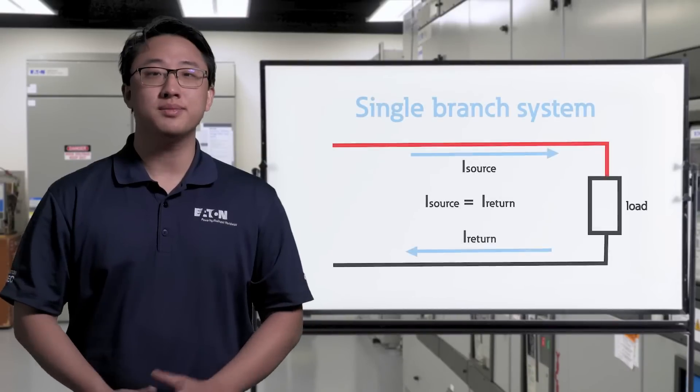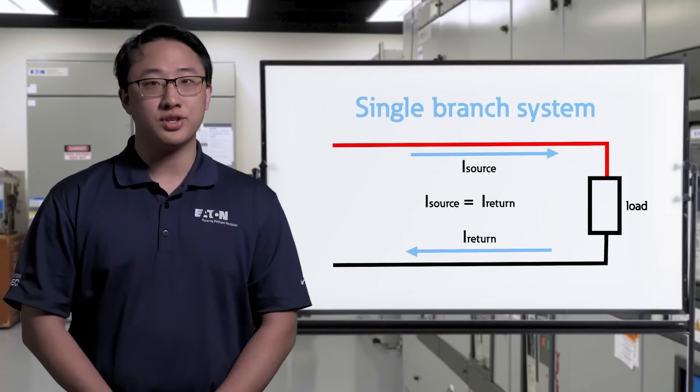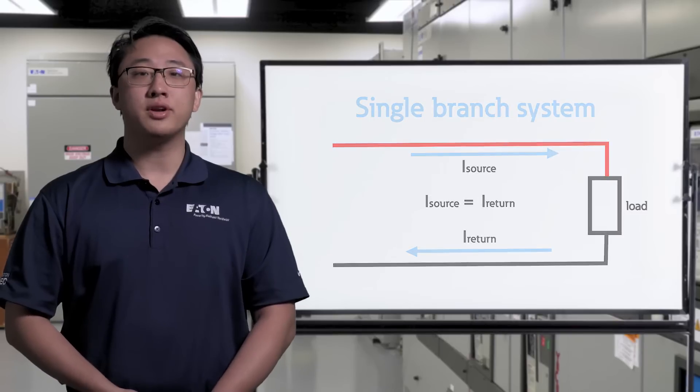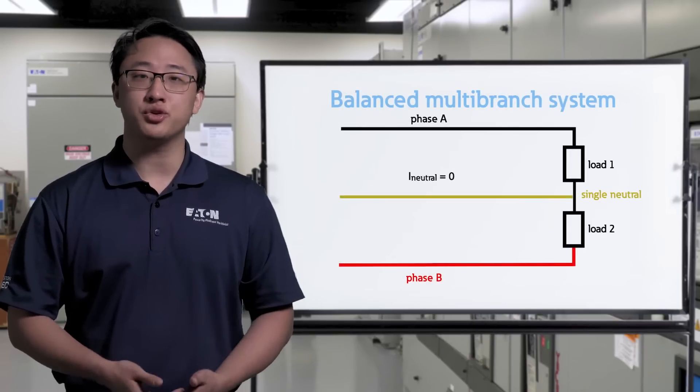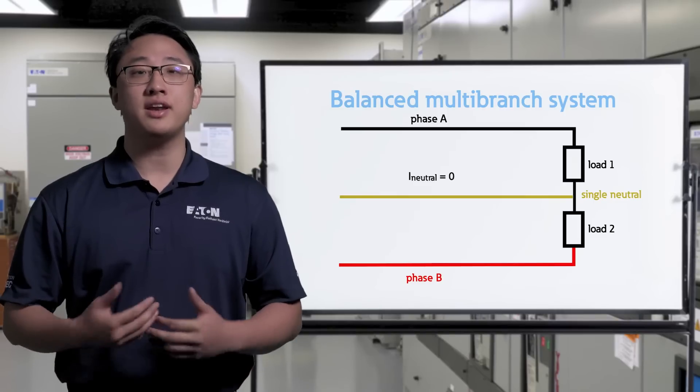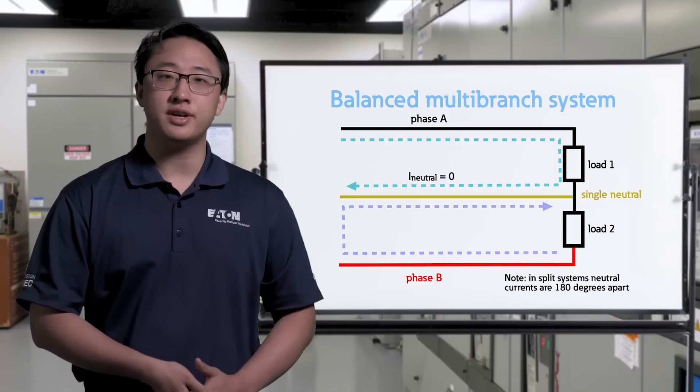In a single branch system, or a system where each phase has its own neutral, the neutral wire will carry all of the return current just like we expect. However, in a balanced multi-branch system, or a system where multiple phases share a single neutral, the neutral actually won't have any current. Instead, the current will return on the other phases which are at complementary points in their cycle.